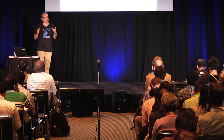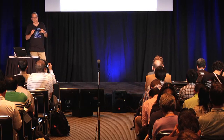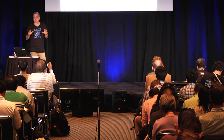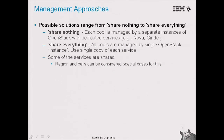When approaching this whole area there are several approaches for management. We define them on a range from shared nothing to shared everything. On shared nothing, each resource pool is managed by its own OpenStack instance with no sharing between services. On shared everything, we have a single instance of OpenStack managing both virtual and physical environments simultaneously, with all services shared — the same Neutron managing both simultaneously. There are also intermediate solutions such as regions and cells with shared Keystone and separate services.